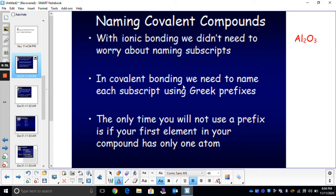However, in covalent bonding, we have to actually use prefixes for every single subscript we use. You will always have a Greek prefix unless your first element in your molecule only has one atom. And you'll see what I'm talking about in a moment.